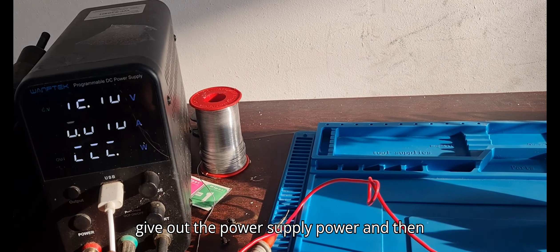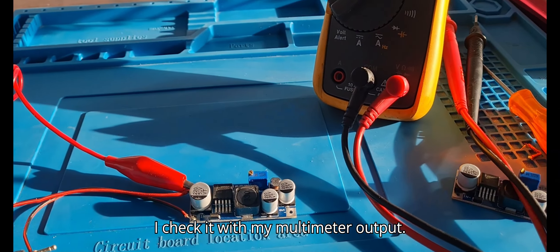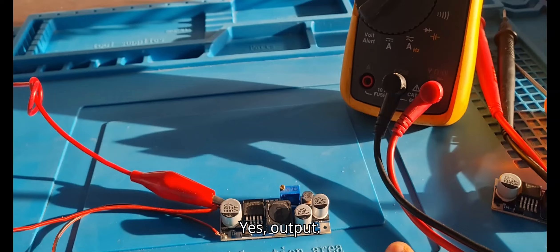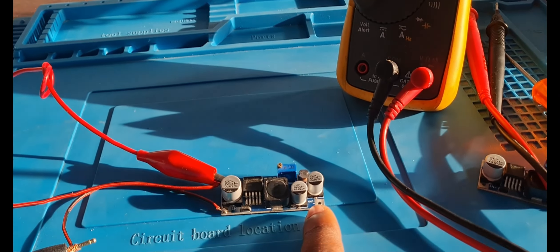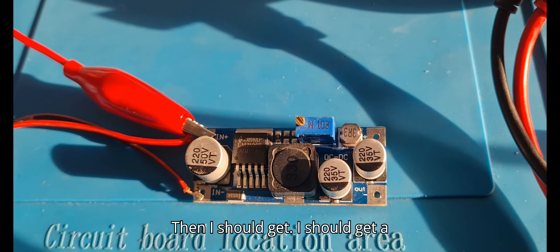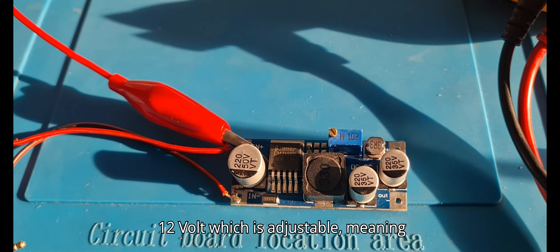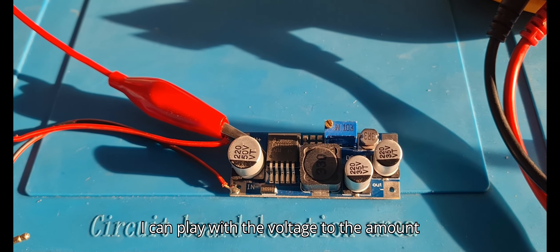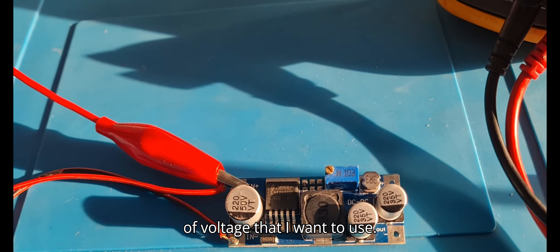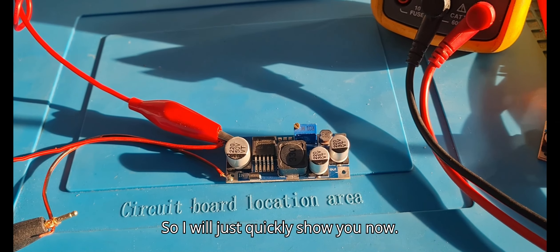And I put it at one amp. When I give power from the power supply and check with my multimeter at the output, I should get 12 volts which is adjustable, meaning I can play with the voltage to get the amount of voltage that I want to use. I'll just quickly show you.